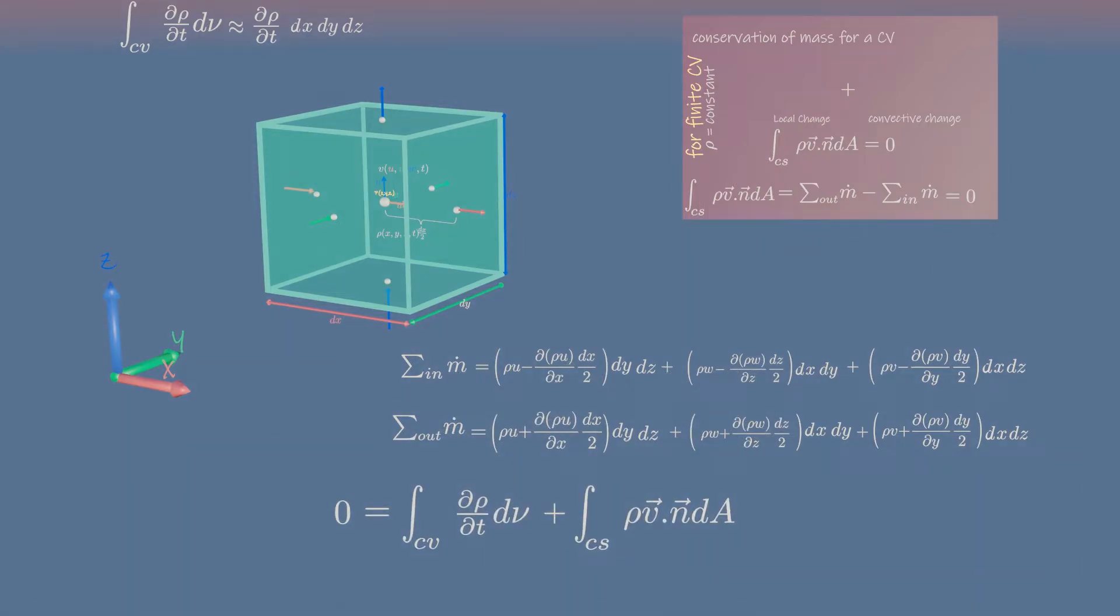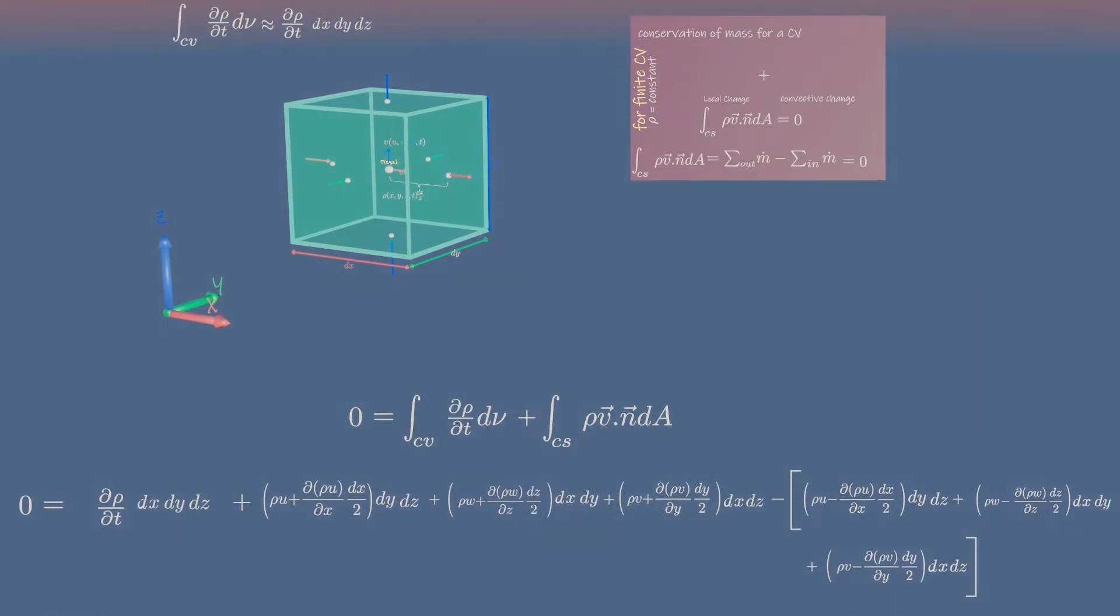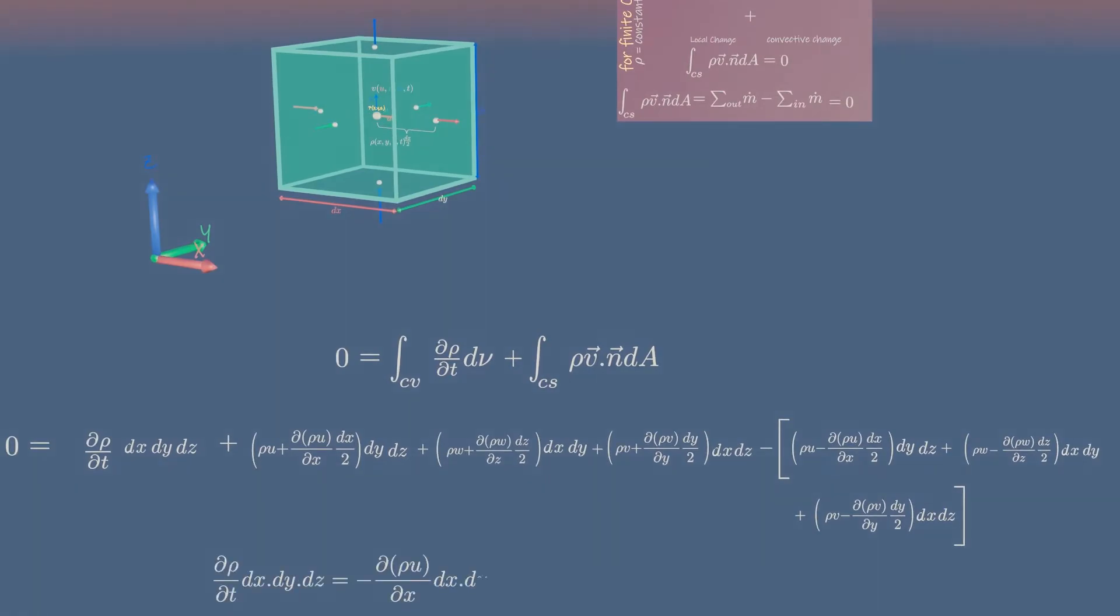Substitute these mass inflow and outflow here. Many of the terms cancel each other out. After combining and simplifying the remaining terms, we are left with... The volume of the box appears in each term and can be eliminated.